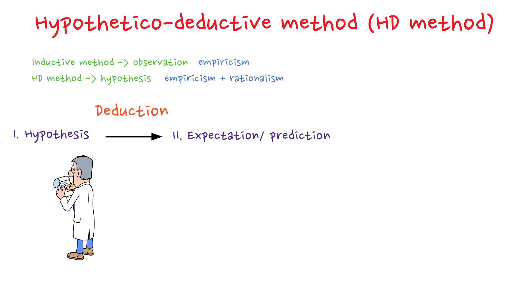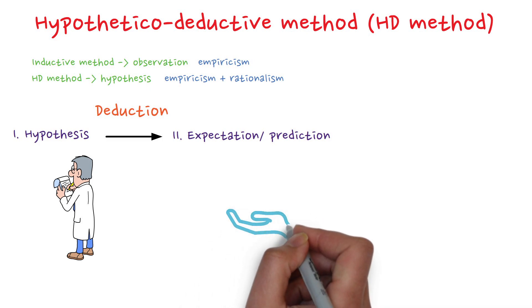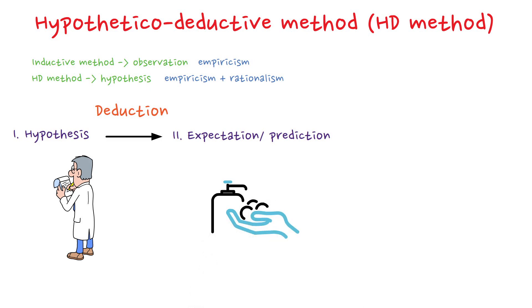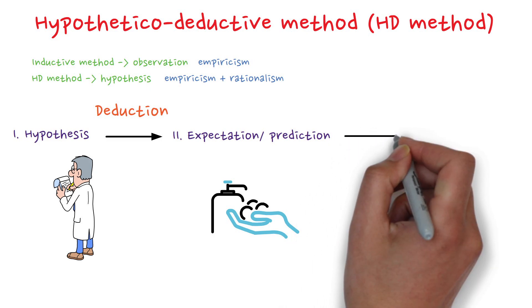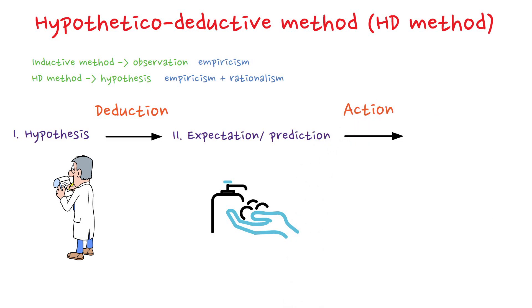From this hypothesis, a prediction was made. If doctors washed their hands in a disinfectant solution before assisting with childbirth, the number of childbed fever cases should decrease dramatically. Semmelweis tested this prediction by implementing a strict handwashing protocol using a chlorine solution.